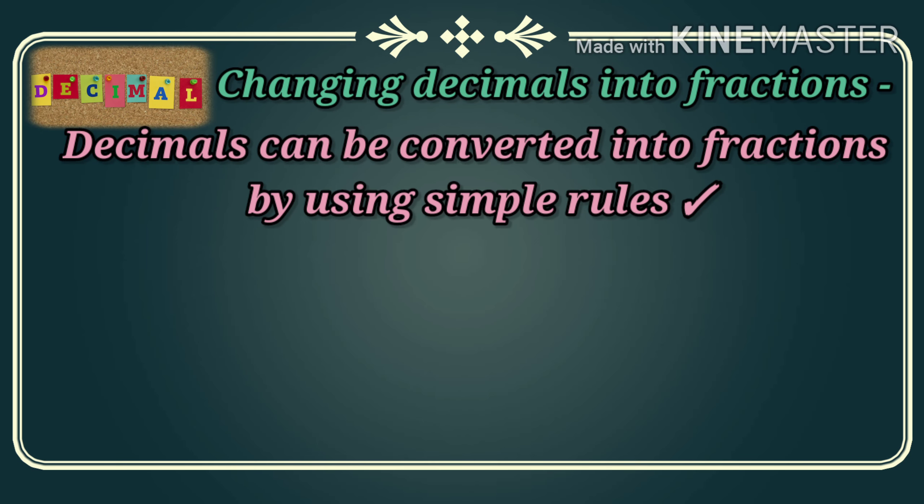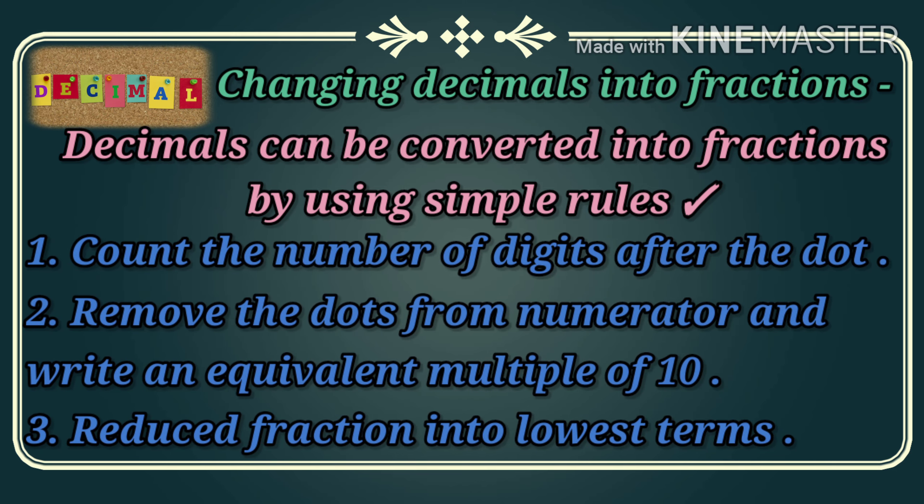Now let's talk about changing decimals into fractions. Decimals can be converted into fractions using simple rules. Number 1: count the number of digits after the dot. Number 2: remove the dot from the numerator and write an equivalent multiple of 10 with the same number of zeros as there are digits after the dot in the denominator. Number 3: reduce this fraction into its lowest term.